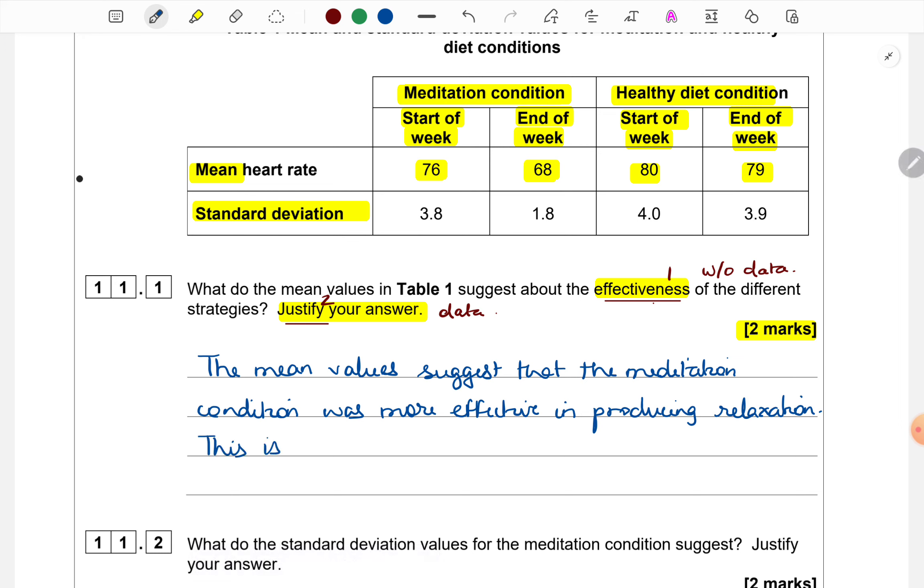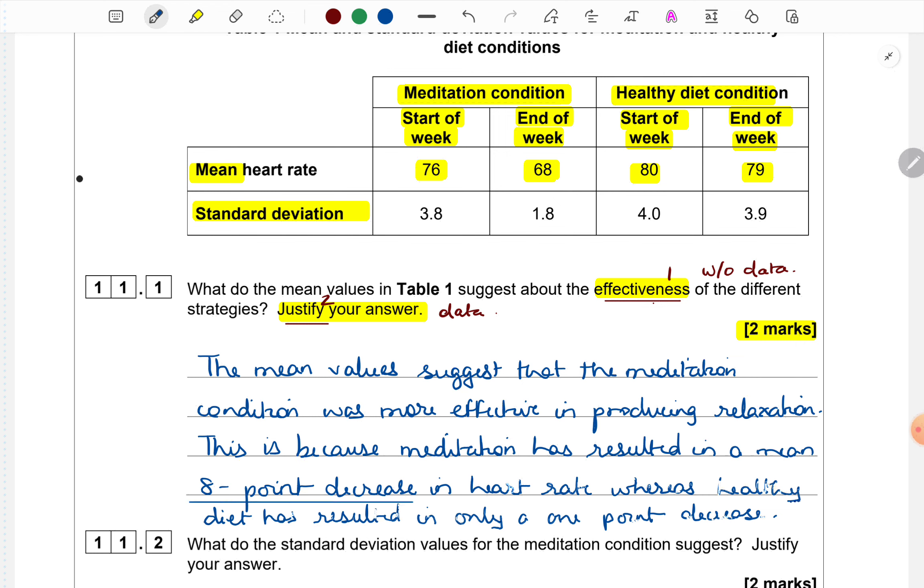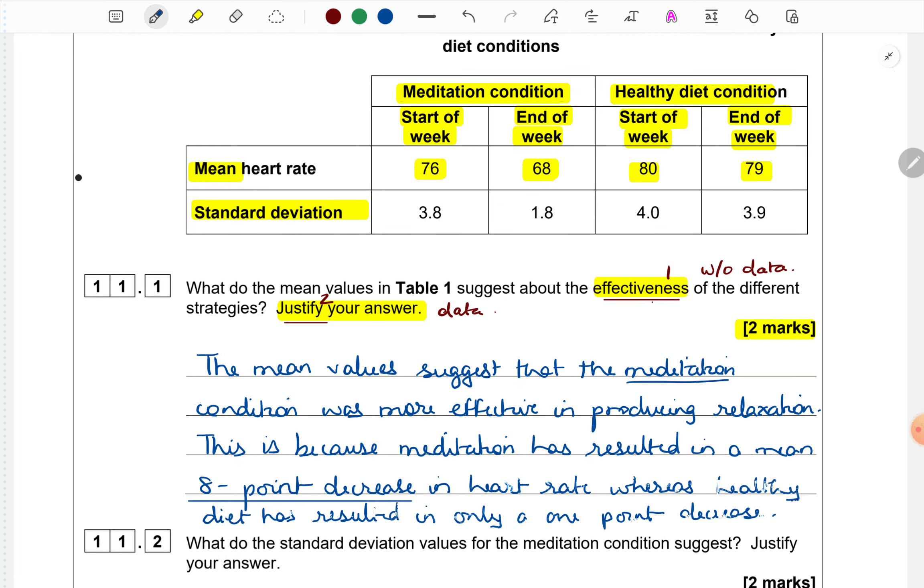This is because meditation has resulted in a mean eight point decrease in heart rate, whereas healthy diet has resulted in only a one point decrease. It is important to specify compared to what. So in the first sentence, I haven't compared directly with the healthy diet condition. But in the second sentence, I have compared it to that.